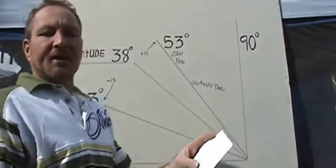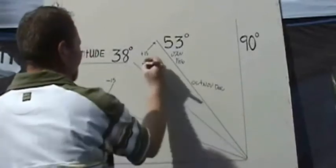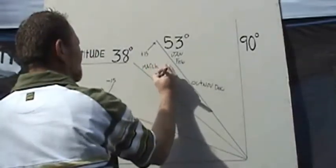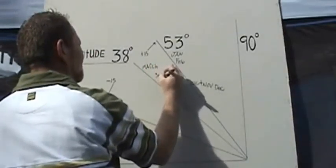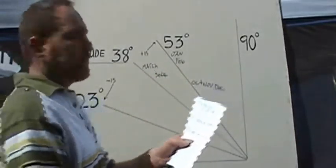And then at 38 degrees, it says that should be March and September. April, May, and August should fall on 23 degrees.